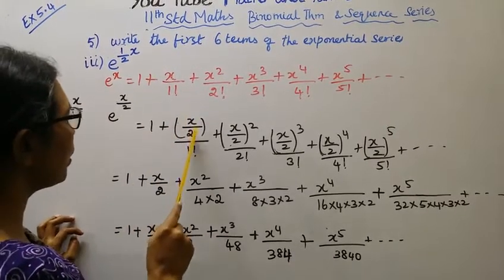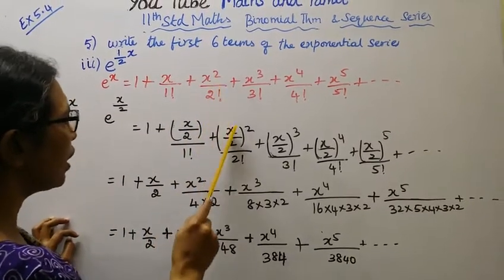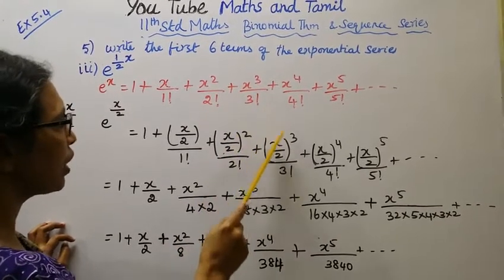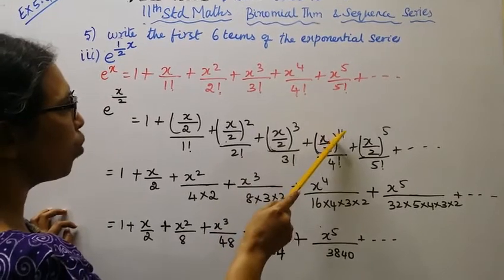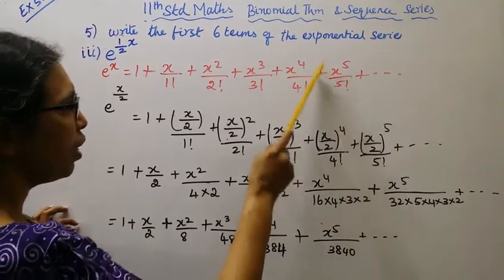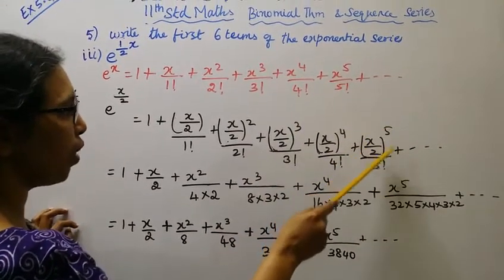This gives us 1 plus x by 2 by 1 factorial, plus x by 2 whole square by 2 factorial, plus x by 2 whole cube by 3 factorial, plus x by 2 whole power 4 by 4 factorial, plus x by 2 whole power 5 by 5 factorial.